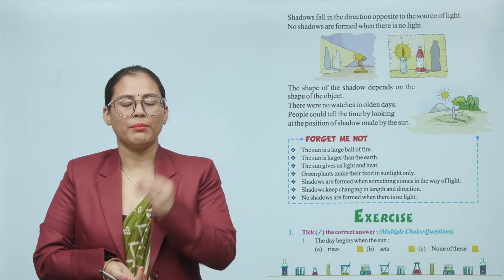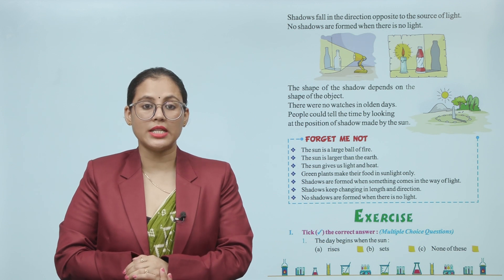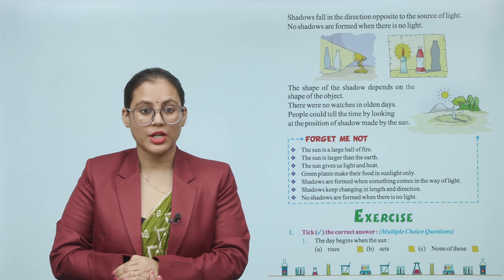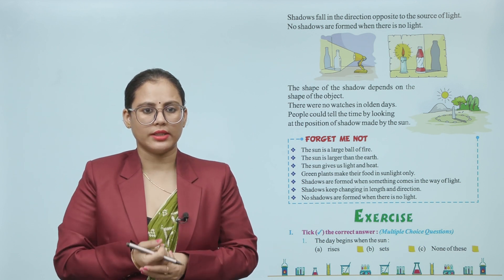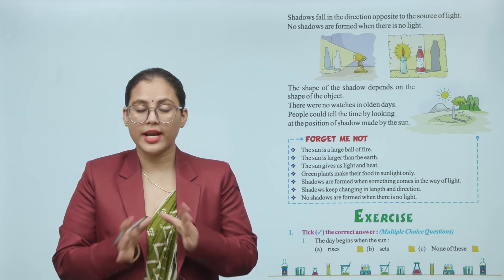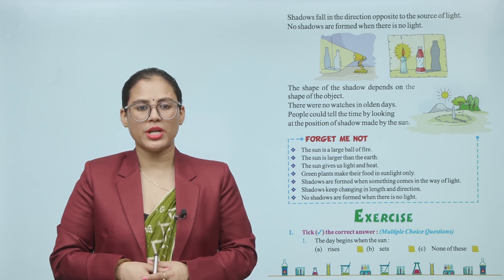The Sun is a ball of fire and it is larger than earth. It provides us heat and light. Green plants make their food with the help of sunlight. Shadows form when something comes in the path of light. Shadows change their length and direction, and if there is no light, then no shadow will form.